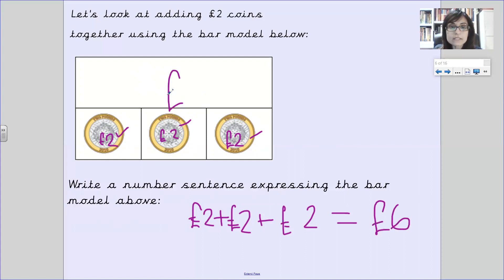I counted in twos because each coin was worth two pounds and I've got three coins. So you've had three coins and they're two pounds each. I went two, four, six, which gave me six pounds.